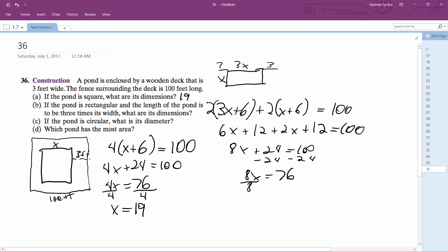76 divided by 8 is equal to 9.5. So if 9.5 for X, then that times 3 is equal to 28.5. So for part B, it's going to be 9.5 feet width, and then length is 28.5 feet.